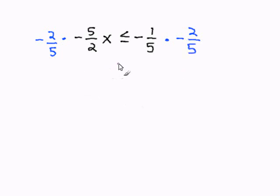Before I proceed with my multiplication, whenever I multiply a negative on both sides of an inequality, the inequality sign will be reversed. So I should do that first. The less than or equal to will become greater than or equal to.